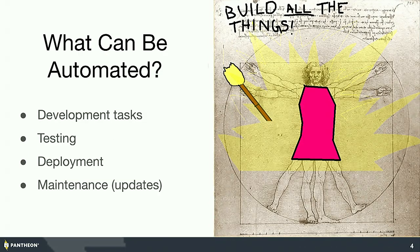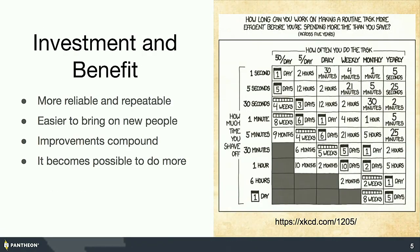We want to build all the things because we don't want tedium in our life. In this presentation we're going to mostly talk about development tasks, testing, deployment, and maintenance — which means software updates. We have a lot of repetitive tasks in our lives and we set out to automate all the things. But it's always a good idea to consider what's the cost.